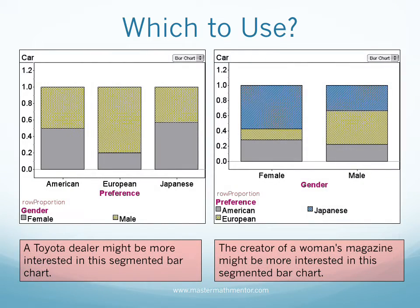Too much information can be worse than too little information in the world of data. How do you decide what kind of table to use and what type of graph to use to illustrate your data? It is best to choose the important condition when deciding on which segmented bar chart to show. For instance, if a Toyota dealer were interested in this data, he might want to use the condition of car preference to isolate the male-female percentages of people who prefer Japanese cars. However, if the editors of a women's magazine were interested, they might only want to use the condition of gender to isolate the car preferences of females.